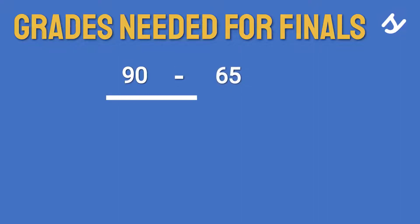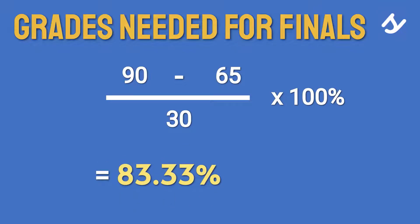minus 65 divided by 30 times 100%, and that gives 83.33%. That means in order to get an A, you're going to need 83.33 out of 100 in the finals.